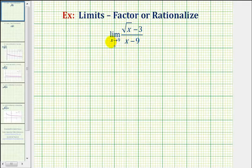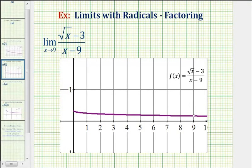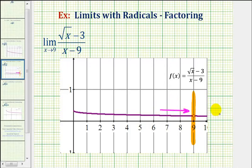Let's first take a look at the graph of this function to see if this limit exists. Here's a graph of our function. Here's x equals positive nine, so we're approaching this x value from both the left side and the right side. Notice as we approach from both sides, we are approaching the same function value, and therefore this limit does exist — even though this function doesn't exist at x equals nine, because we have this hole here.